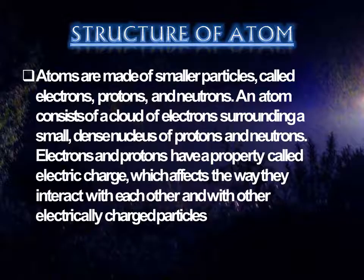Let's move to the structure of an atom. Atoms are made up of smaller particles called electron, protons, and neutrons. An atom consists of a cloud of electrons surrounding a small dense nucleus of protons and neutrons. Electrons and protons have a property called electric charge — negative charge and positive charge — which affects the way they interact with each other and with other electrically charged particles. Due to these particles, various elements combine to form molecules, for example hydrogen and oxygen combining to form water.